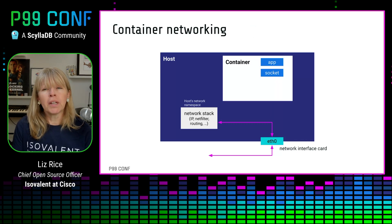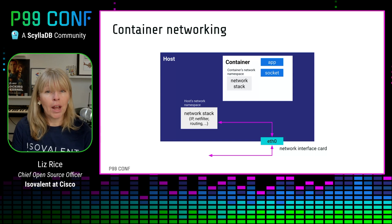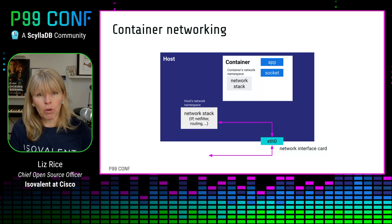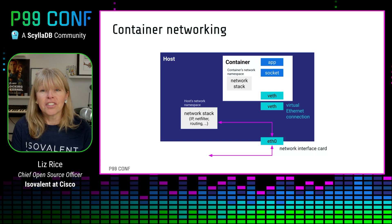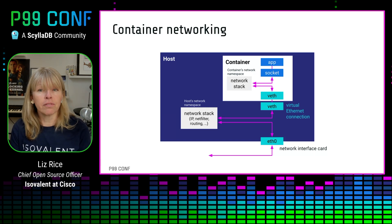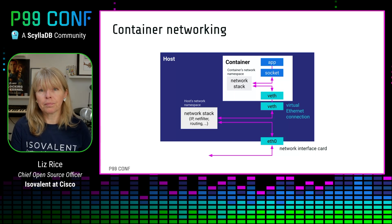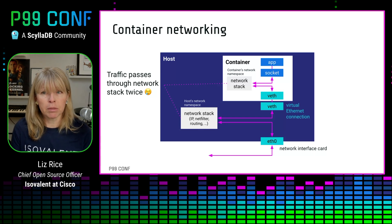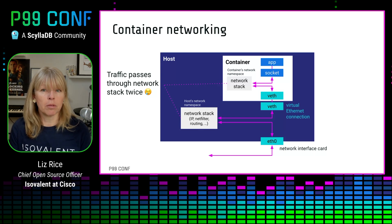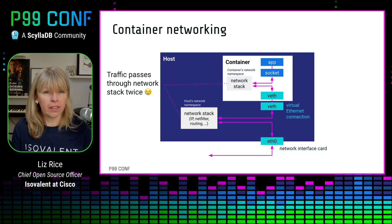When we introduce containers, we deliberately isolate our applications from one another and from the underlying host. That typically includes giving them their own network namespace so that the container's networking stack is separated from that of the host. The two network namespaces are connected by a virtual Ethernet connection, with a virtual Ethernet device on either side that looks just like a regular network device with a virtual MAC address. So packets going to or from a containerized application actually have to pass through the network stack twice — once on the host and once inside the container's network namespace.